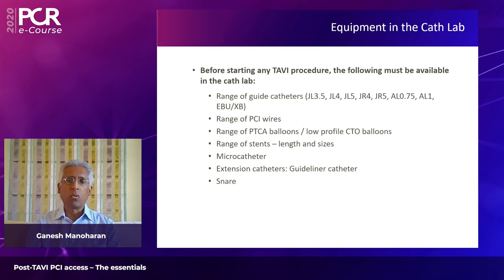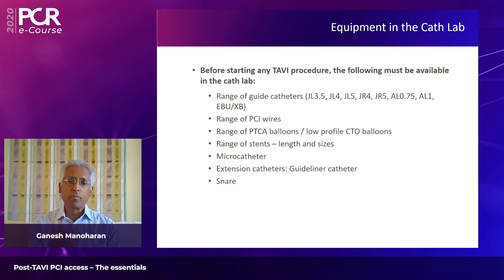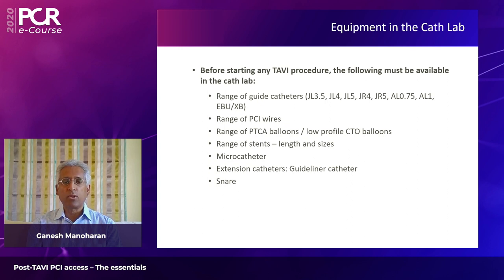In the cath lab, what technologies do you need to safely access coronary arteries? You need a range of guide catheters between JL 3.5 and EBU, a range of PCI wires including floppy wires, hydrophilic wires, and occasionally CTO wires, a range of PTCA balloons including low-profile CTO balloons, a range of stents, micro catheters, and extension catheters like GuideLiner, and a SNARE.